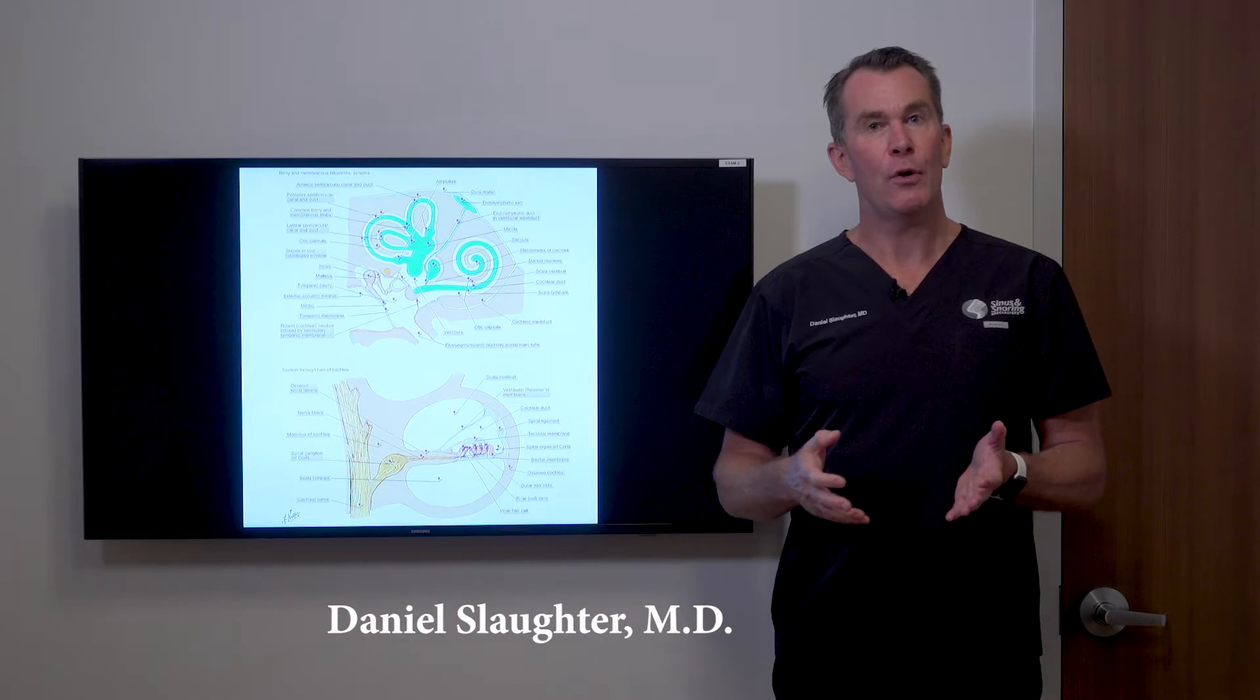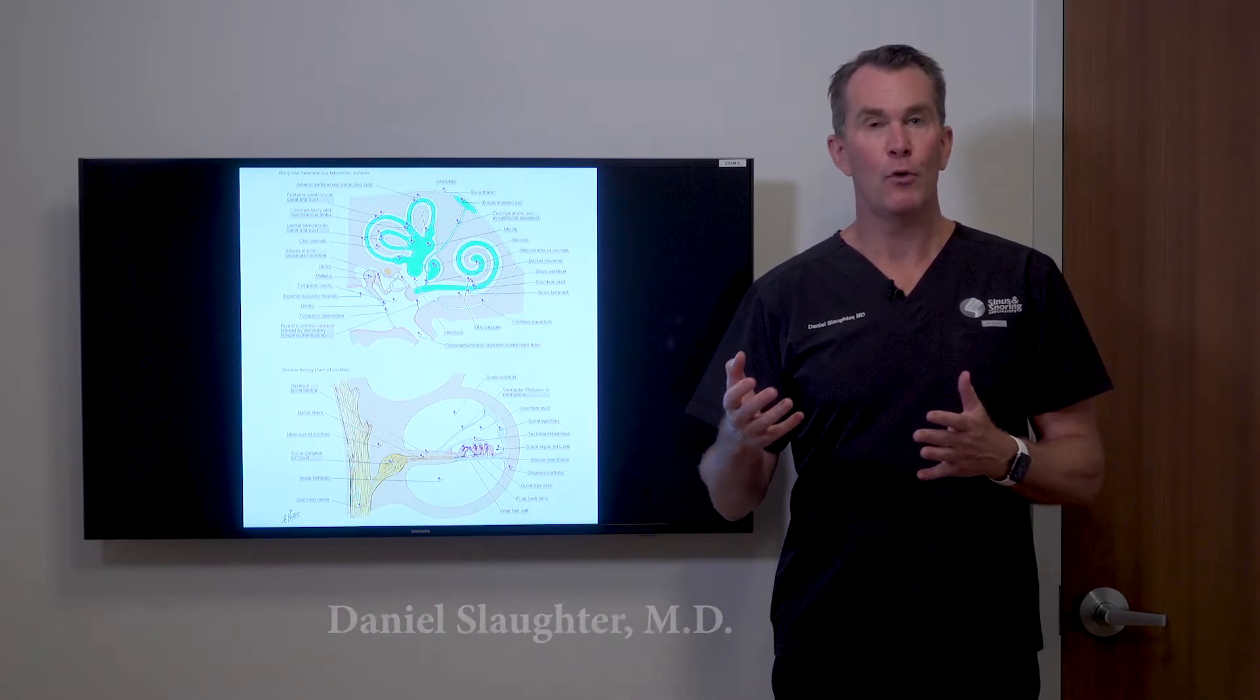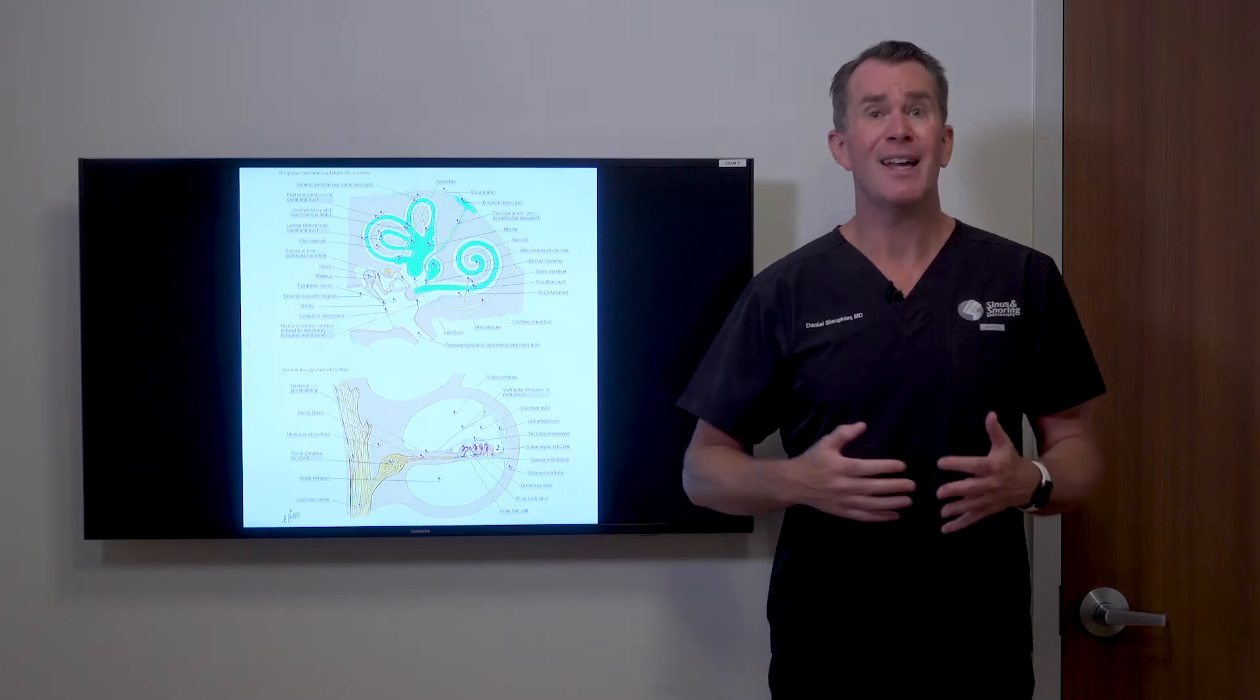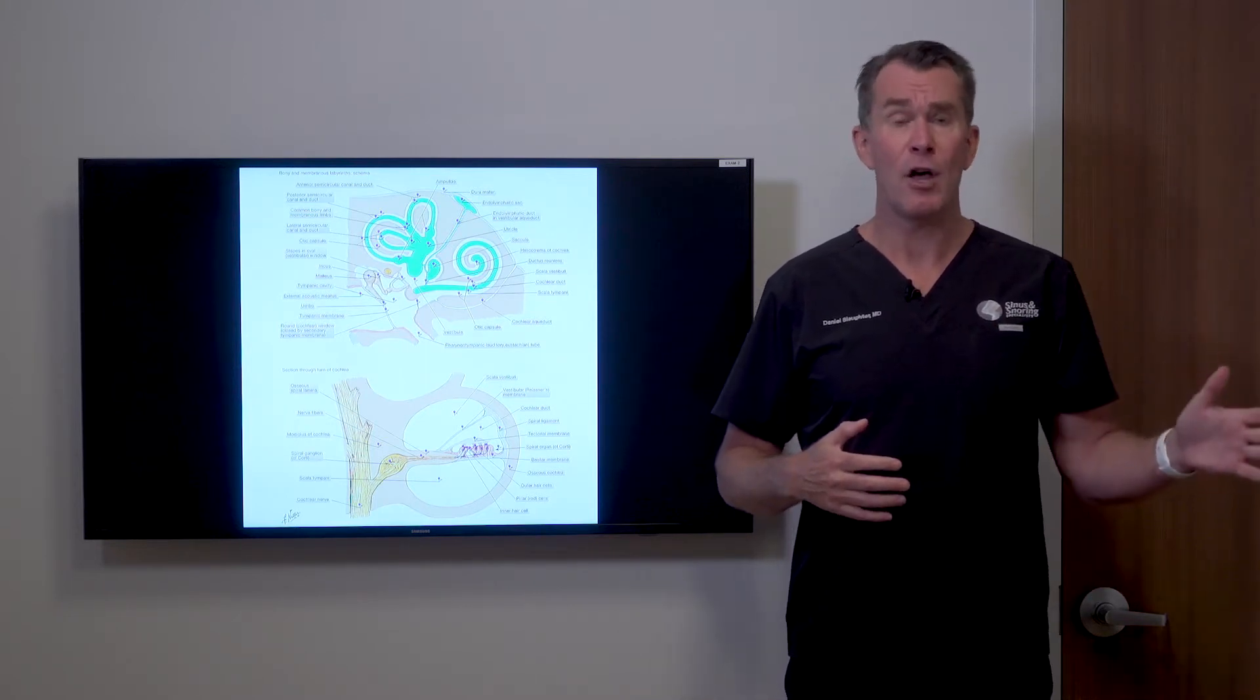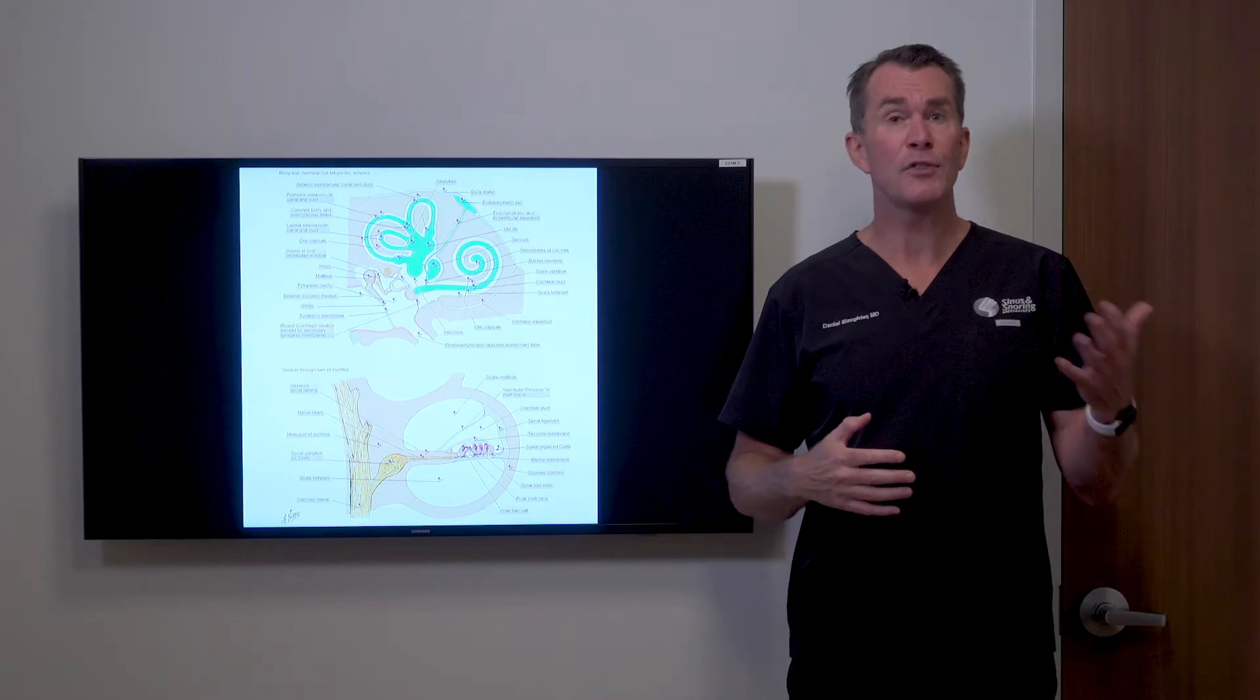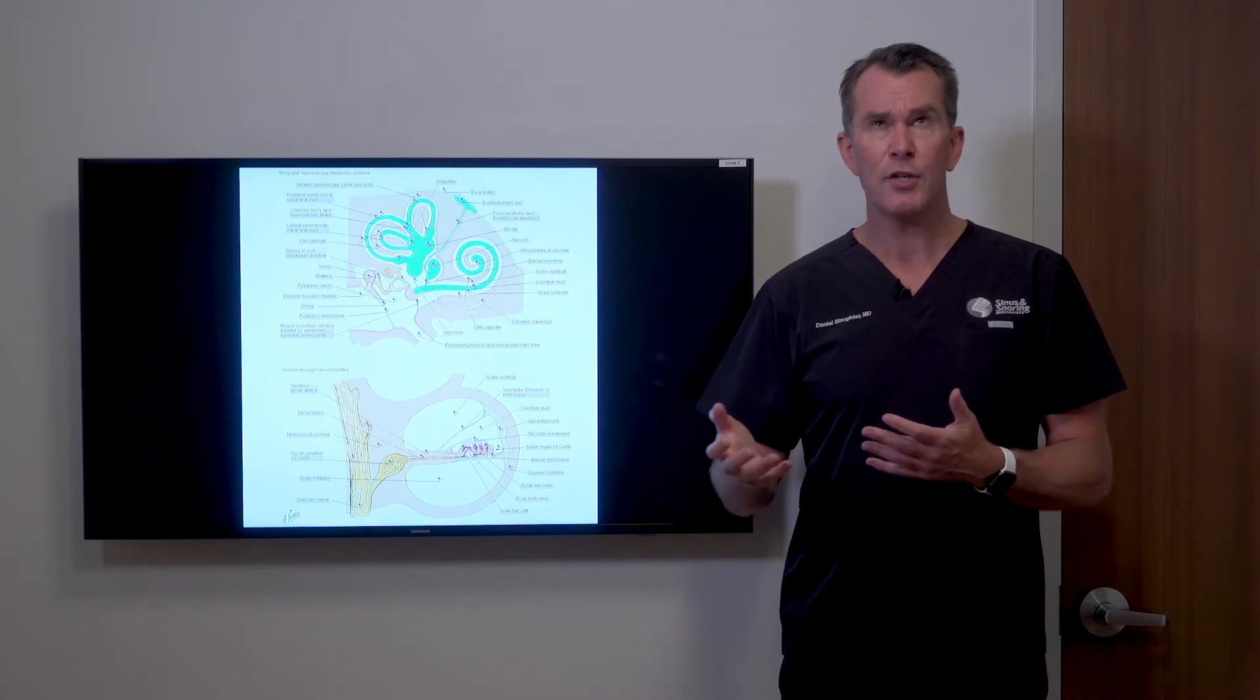You may have had an episode of vertigo. You woke up in the morning and the room was spinning around in a circle, with significant nausea. You may have been laid up all day in bed, or even gone to an emergency room and been told that you have a diagnosis of vertigo, essentially given symptomatic therapy to make yourself better.